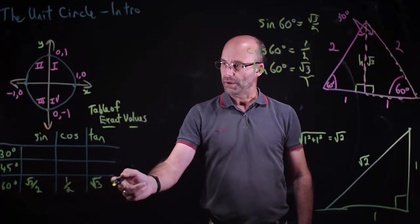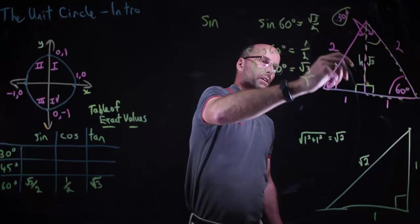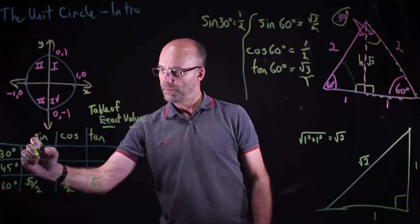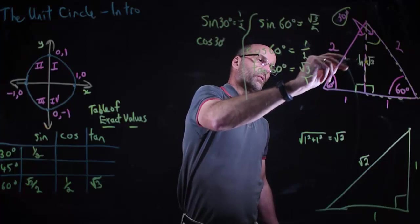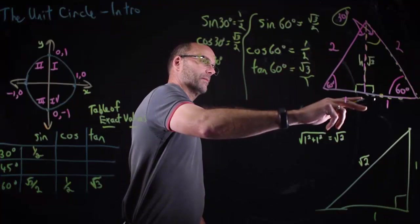Now this is a 30° angle, so we can complete the pattern. Sine 30° is opposite over hypotenuse, which is 1/2. Cosine 30° is adjacent over hypotenuse, which is √3 over 2. And tan 30° is opposite over adjacent, which is 1 over √3.